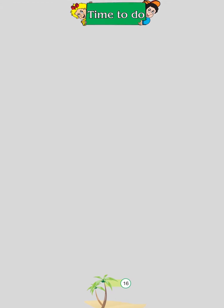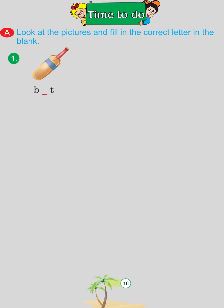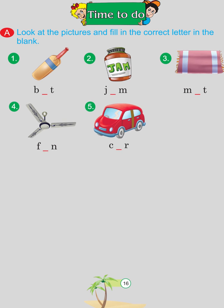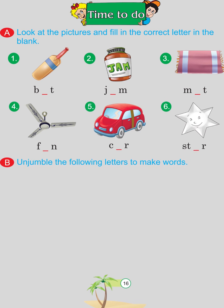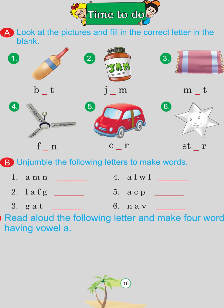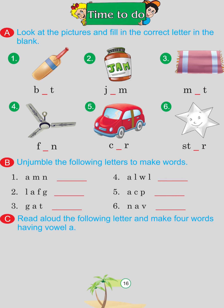Time to do. Look at the pictures and fill in the correct letter in the blank: Bat, Jam, Mat, Fan, Car, Star. Unjumble the following letters to make words: Man, Flag, Tag, Wall, Cap, Van. Read aloud the following letters and make four words having vowel A.